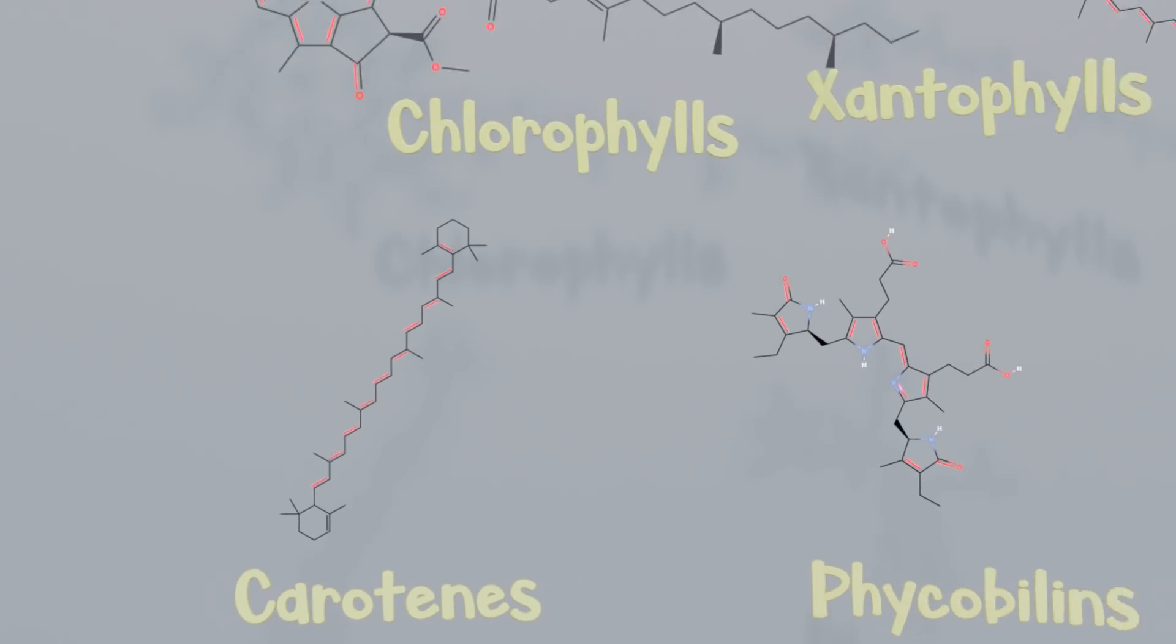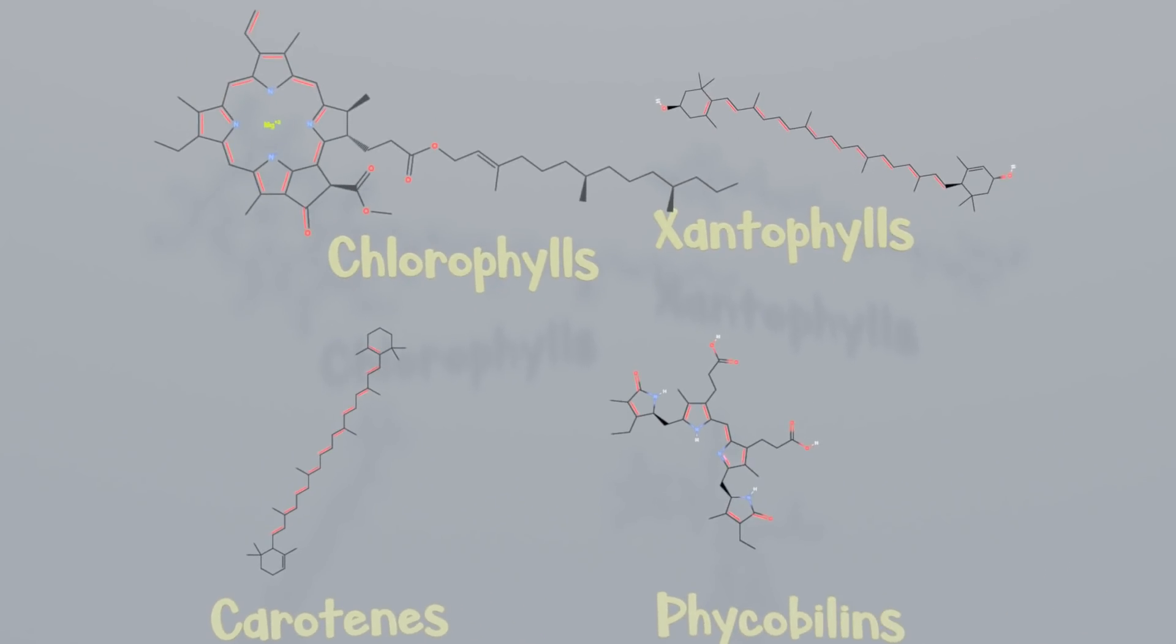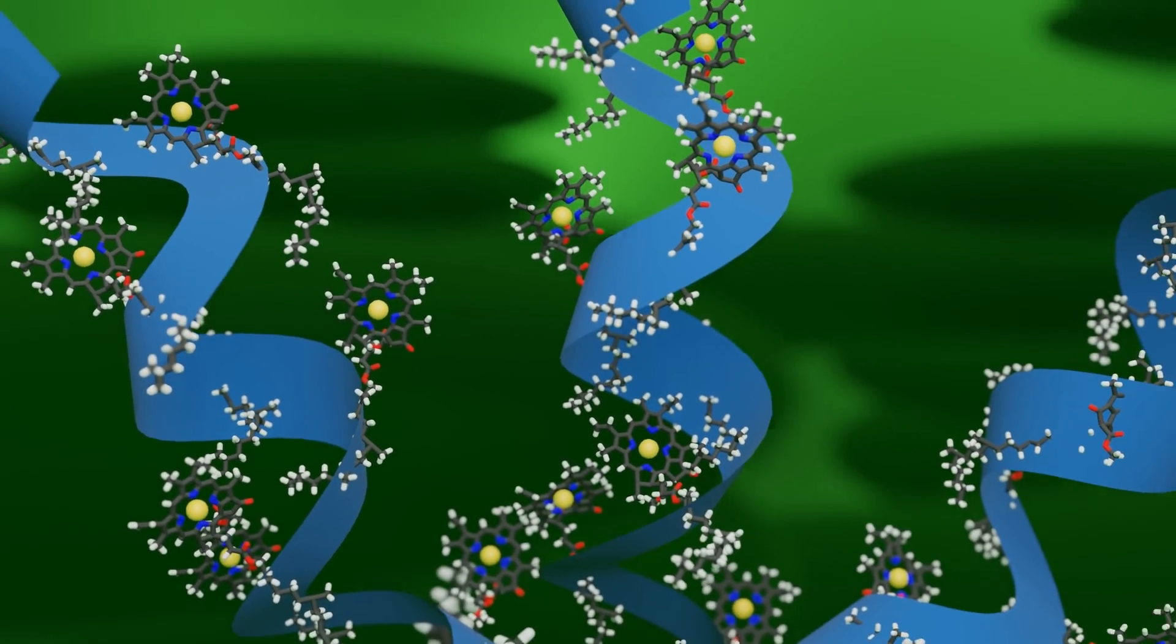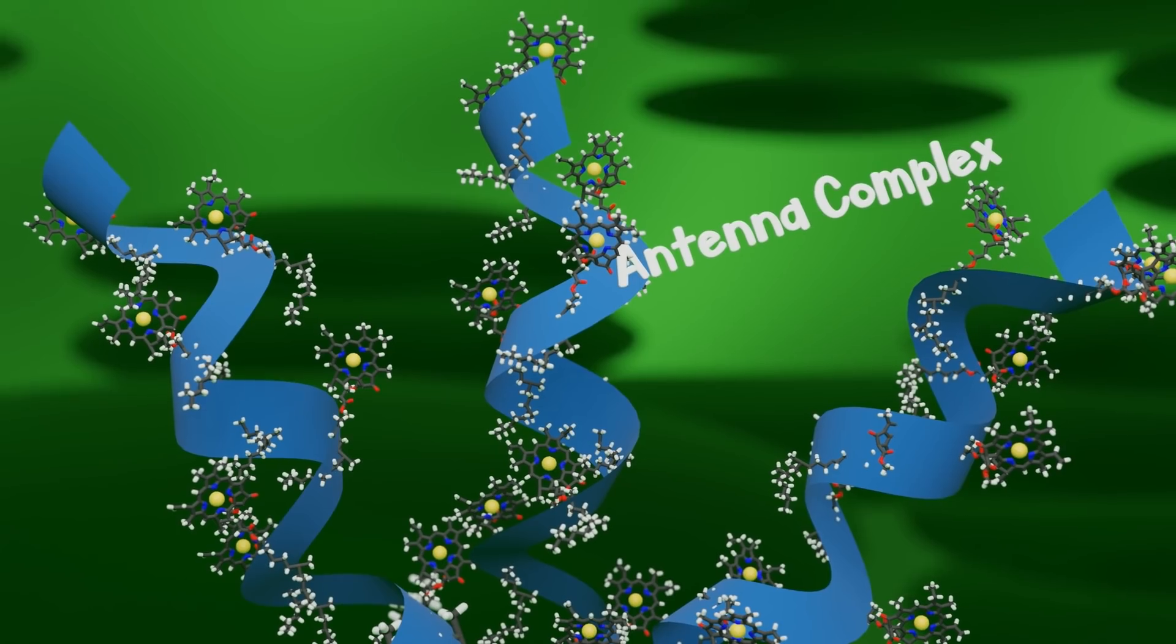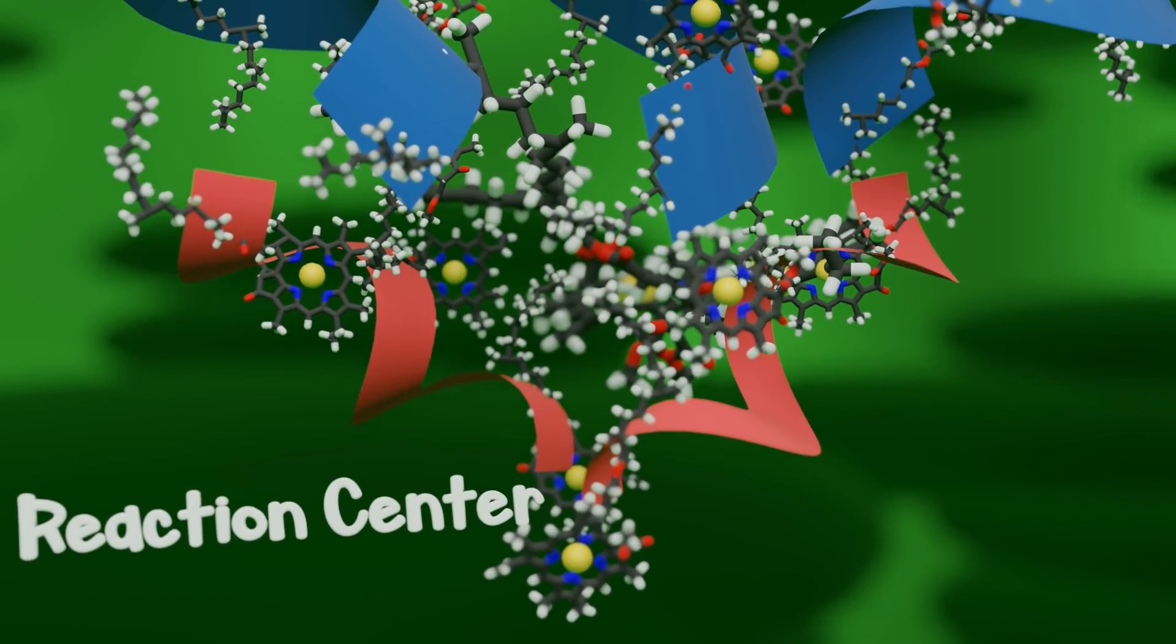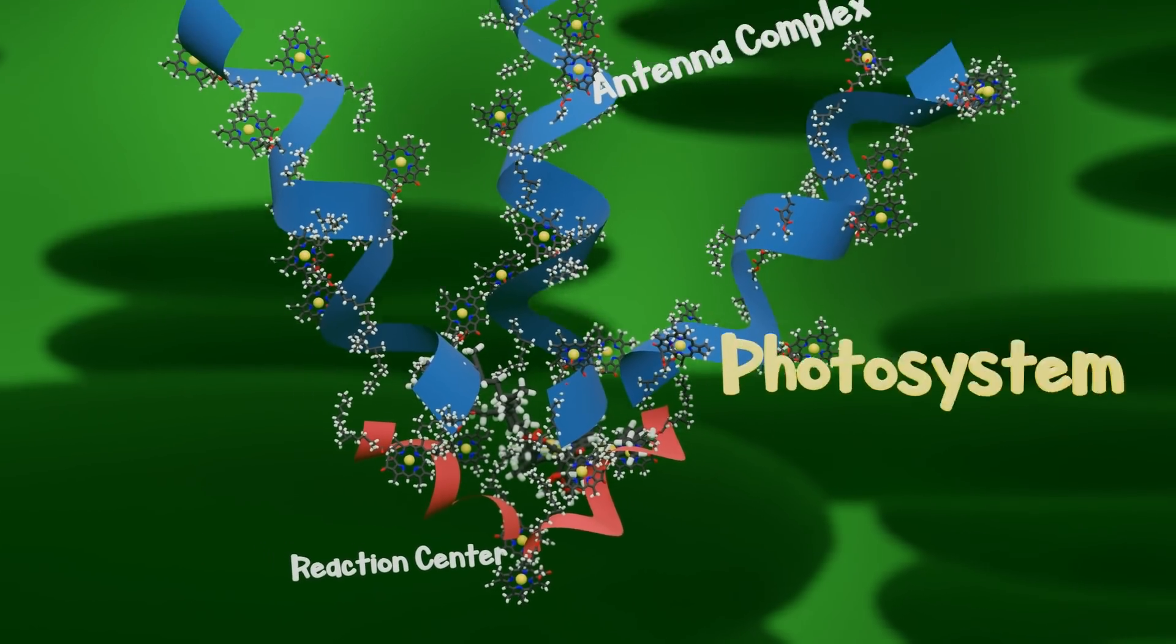Now we ask, what does a pigment do when it absorbs light? Pigments can be found embedded in specialized membranes of what we call antenna complexes. Antenna complexes are connected to a reaction center, and these two components make up what we call a photosystem.